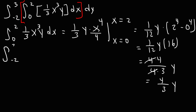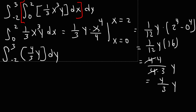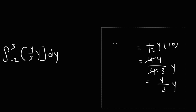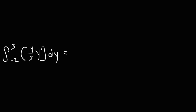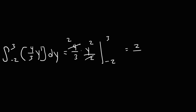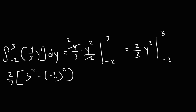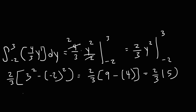Right now we're left with the integral from negative 2 to 3 of 4/3 y dy. Since y is to the first power, the antiderivative is 4/3 times y squared over 2, evaluated from negative 2 to 3. 4 divided by 2 is 2, so we have 2/3 y squared evaluated from negative 2 to 3. Plugging in 3 gives 3 squared, and then minus negative 2 squared. 3 squared is 9, negative 2 squared is positive 4. So we have 9 minus 4, which is 5. And 2 times 5 is 10, so the final answer is 10/3.